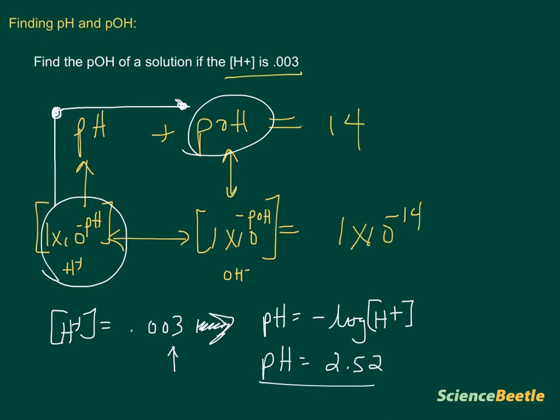But now that we've got the pH, we're at this point now. Now, since I know that if I take the pH and add it to my pOH, that'll give me 14. What I can do at this point is I can take this number and subtract it from 14. So 14 minus the 2.52 will give me my pOH.